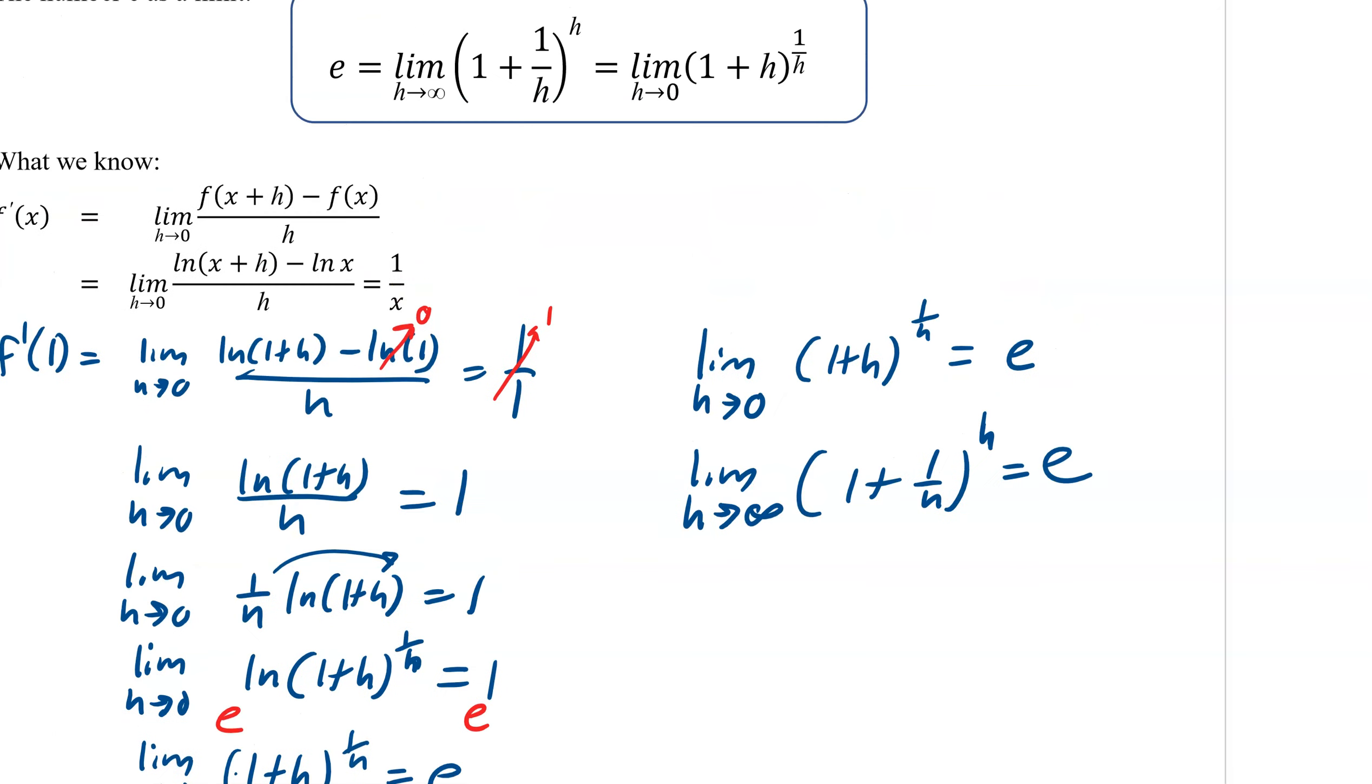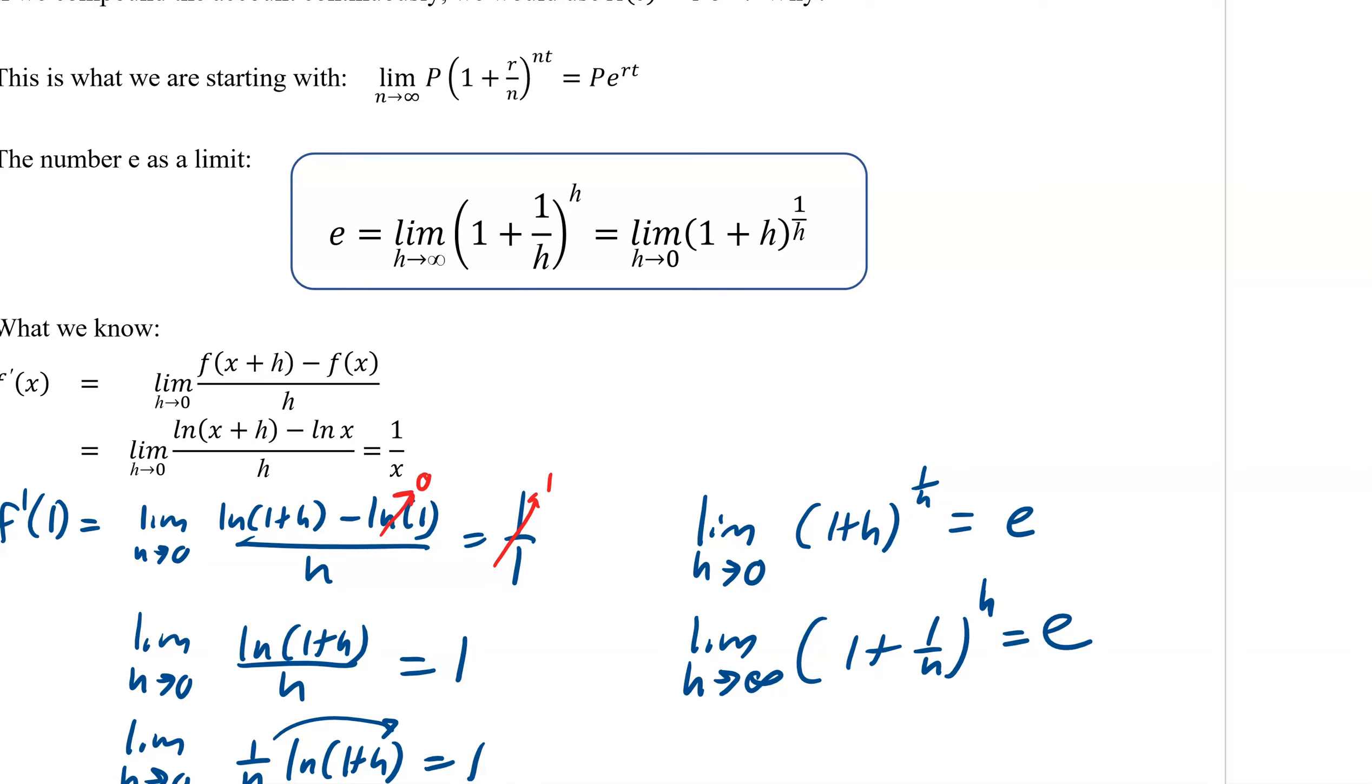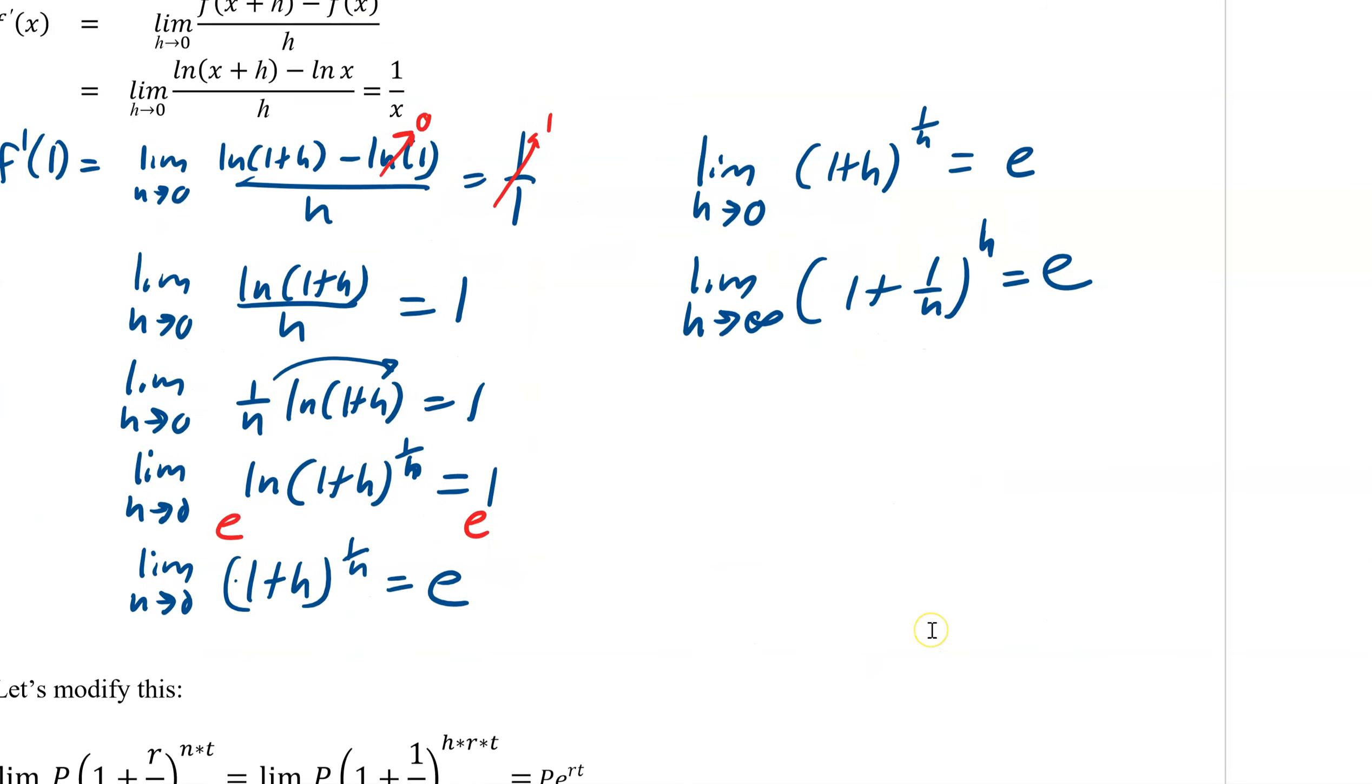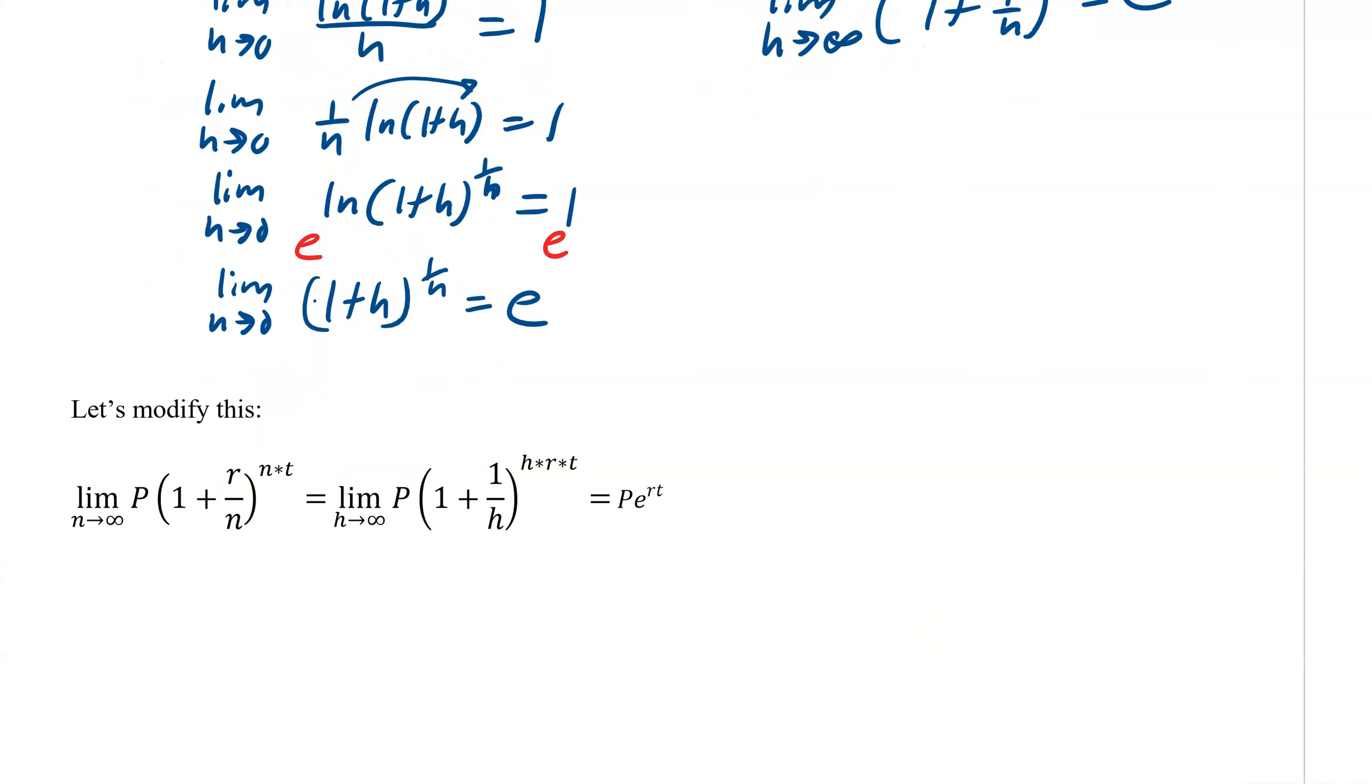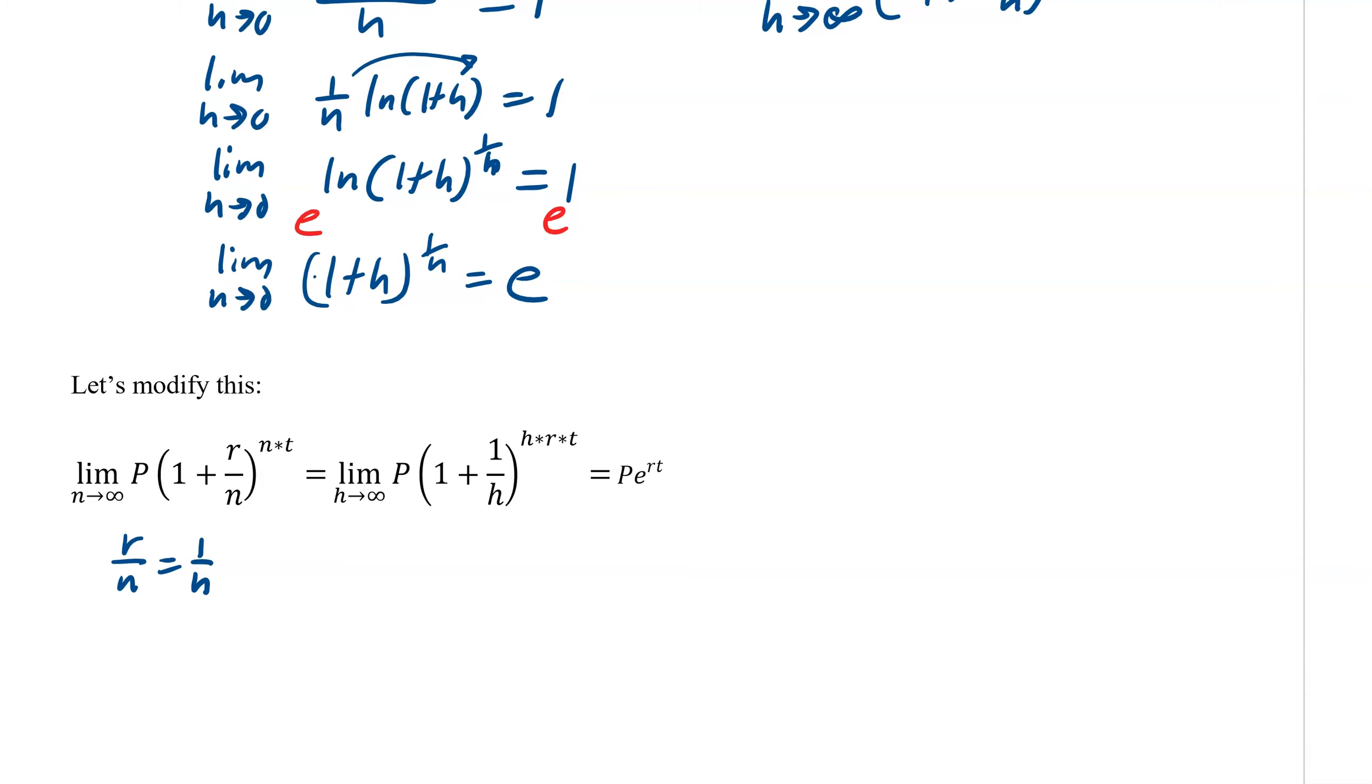All right. So now that we know that the limit as h approaches infinity of 1 plus 1 over h to the power of h is equal to e, now you can see here that we're going to be using that e to do this. So we've got to convert this formula into something with that. So that's what we're going to start with. So I've already started modifying it. This is just to remind me how we modify it. So it makes it a lot quicker for us. So we have that to the power of n with a t. And then now we can take and replace that. So our r over n is going to be 1 over h. So we want r over n to equal 1 over h.